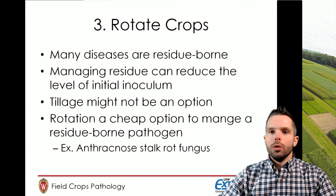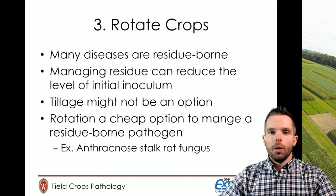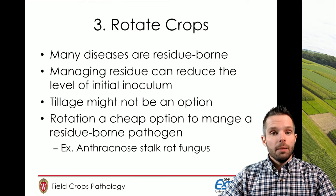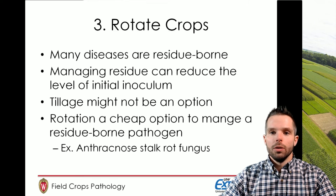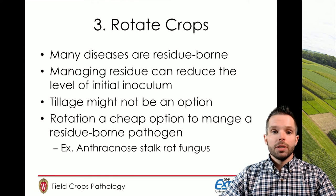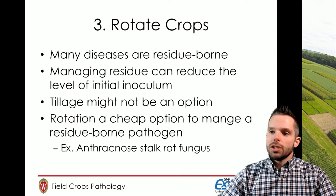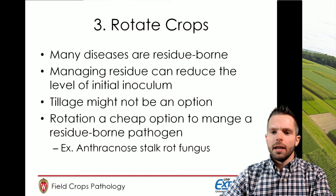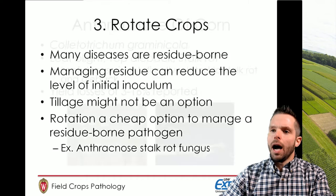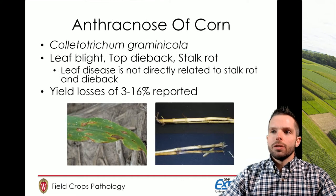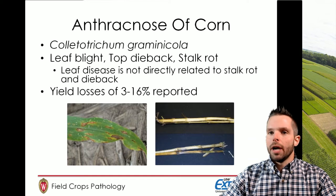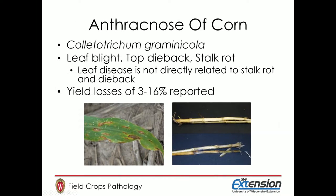The third point was to rotate crops. Many diseases are residue-borne, so managing that residue can reduce the level of initial inoculum in a particular field. Tillage can be helpful from this standpoint; however, in areas where we want to practice conservation tillage or run a no-till system, that obviously isn't an option. So rotation would be the next way to manage that residue, and rotation really is a cheap option. As an example, let's look at anthracnose stalk rot on corn, caused by Colletotrichum graminicola.